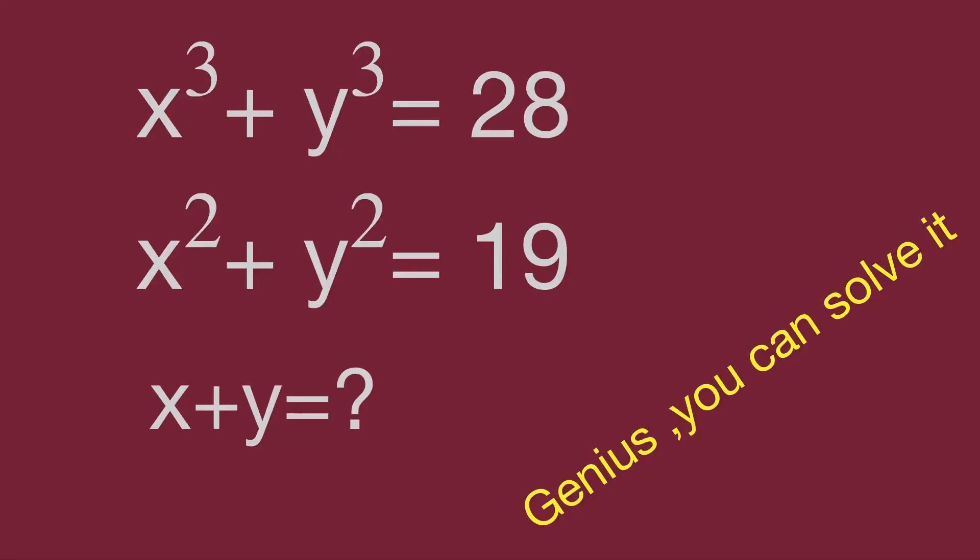Hello, you are watching Bala Hippo math genius riddles. The question is x cubed plus y cubed equals 28, x squared plus y squared equals 19. Find the value for x plus y.